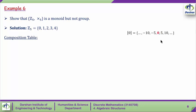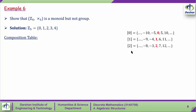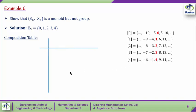First, class [0] under modulo 5 is {0, 5, 10, 15, -5, -10, ...}. Class [1] is {1, 6, 11, -4, -9, ...}. Similarly we define classes [2], [3], and [4]. For the composition table, we write multiplication modulo 5 as the operation and elements of Z5 on both axes.